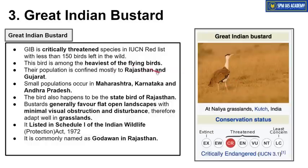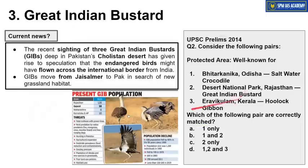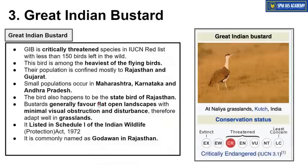These are one of the heaviest flying birds, so they cannot fly far — they can only move short distances. The maximum population of Great Indian Bustards is in Rajasthan, followed by Gujarat. About 128 are in Rajasthan alone, with smaller numbers in Maharashtra, Karnataka, and Gujarat. Because of this concentration, the Great Indian Bustard has been declared the state bird of Rajasthan. It generally prefers flat open landscapes with small grasslands to minimize visual obstruction.